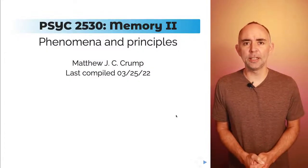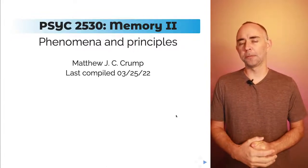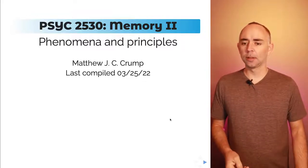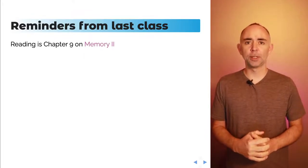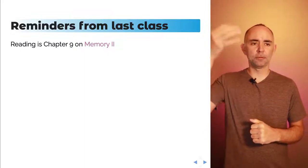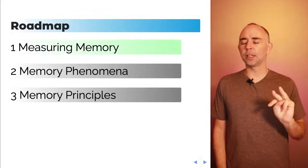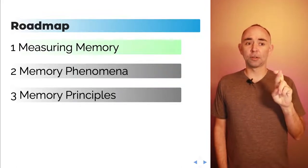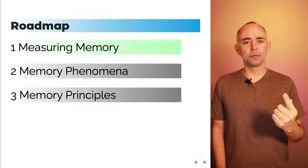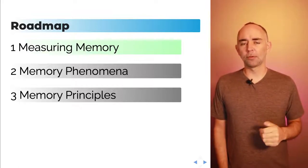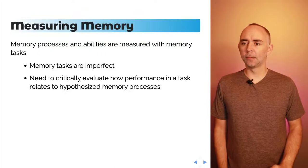Welcome back, this is Learning Module 8, Memory 2. We're going to spend a second week talking about memory phenomena and memory principles. As a reminder, you should be reading the second chapter on memory — it's Chapter 9, Memory 2 from the textbook. This series of mini-lectures roughly covers what's in that chapter. Here's the roadmap: I'm going to try to do this in three videos and keep them to about 20 minutes each. We're talking about measuring memory, a bunch of different examples of memory phenomena described in cognitive research, and some general principles of memory. Let's get started.